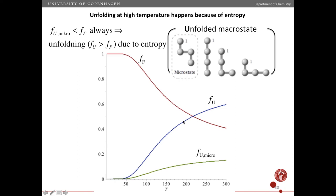So you go from the folded state being most probable to the unfolded state being most probable, because there are more ways of making the unfolded state. This more ways of making the unfolded state means that the unfolded state has a higher entropy. So unfolding at higher temperatures happens because of the entropy.